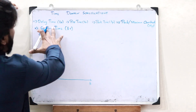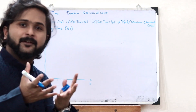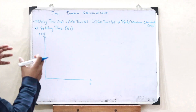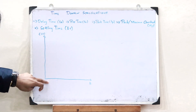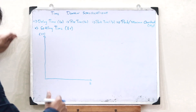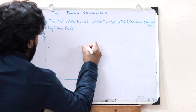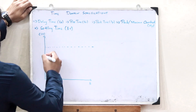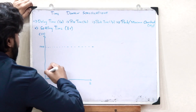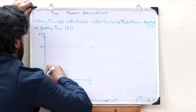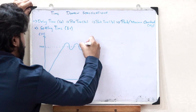In order to understand these various time domain specifications, we need to plot the response diagram of a particular control system. We plot the time response along the y-axis and the time along the x-axis. If this is the 100% value that a particular control system is desired to obtain, then when we turn on the control system, its response diagram would look somewhat like this — first increasing and then settling.